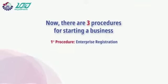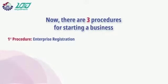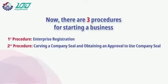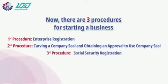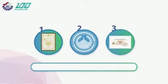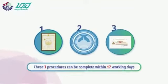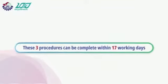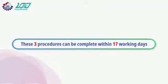The three procedures are: 1. Enterprise Registration, 2. Carving a company seal and obtaining an approval to use the company seal, and 3. Social Security Registration. These three procedures can be completed within 17 working days.